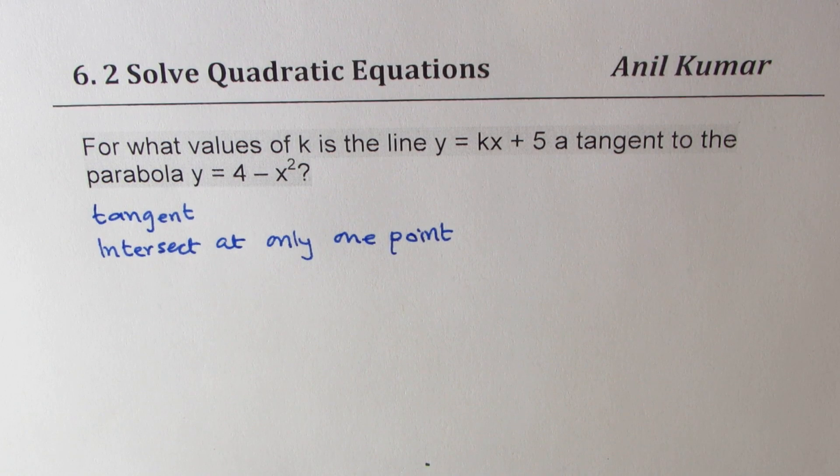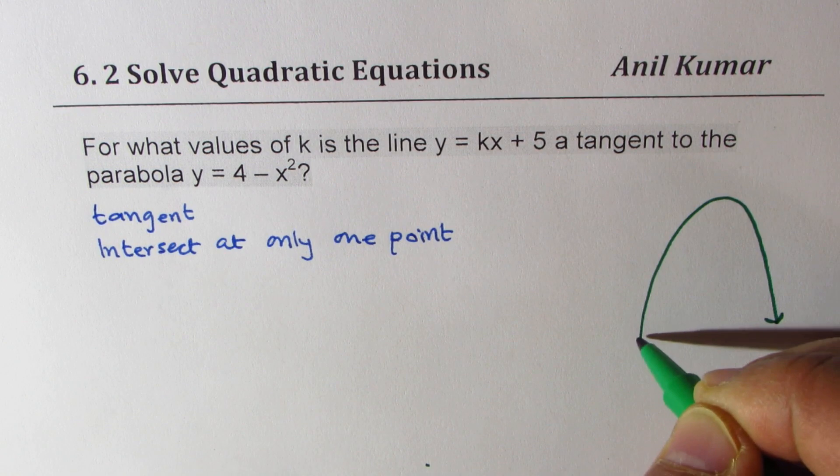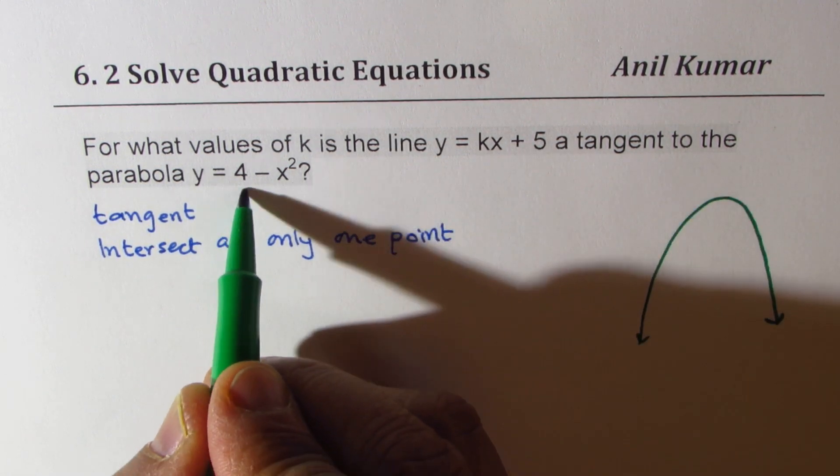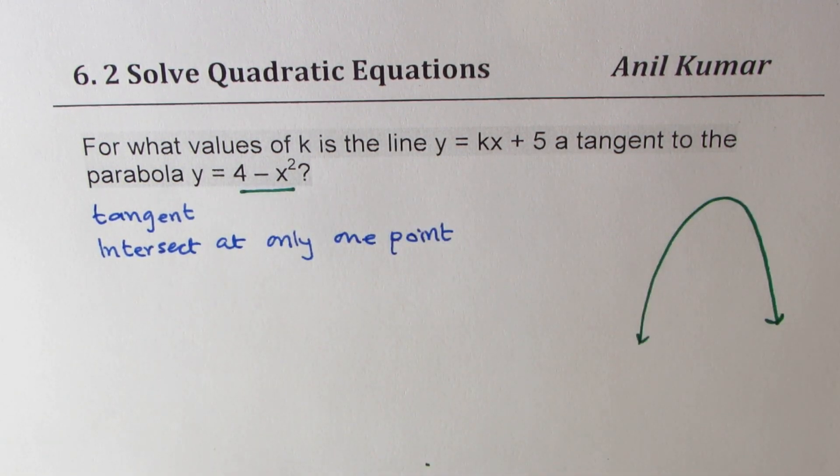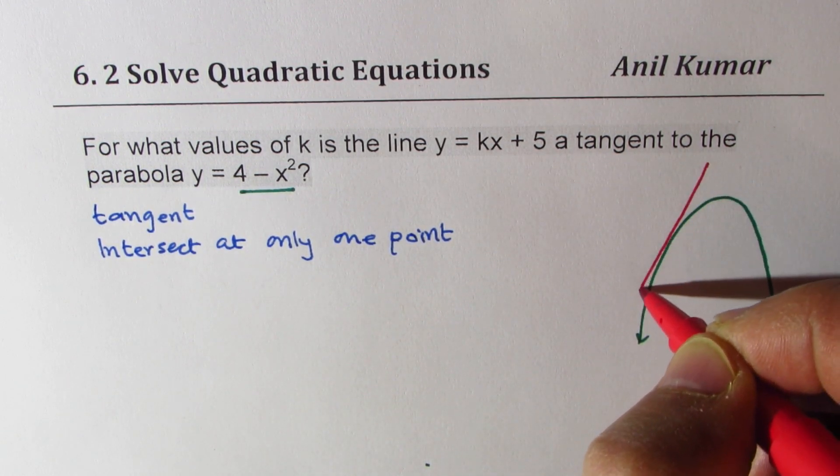So for example, if I have a parabola, let's say kind of like this—I'm taking something which is turning down since it's 4 - x². In that case, one of the tangents could be, for example, kind of like this.